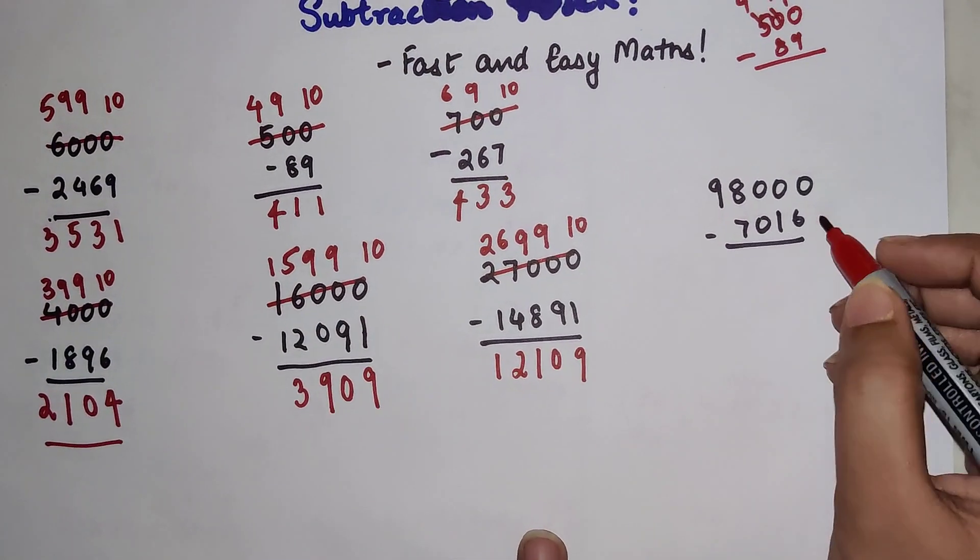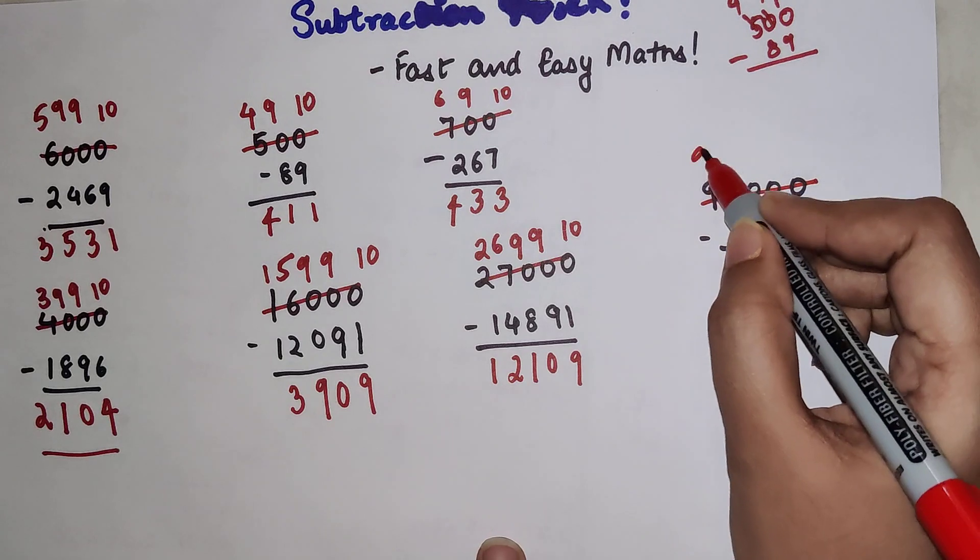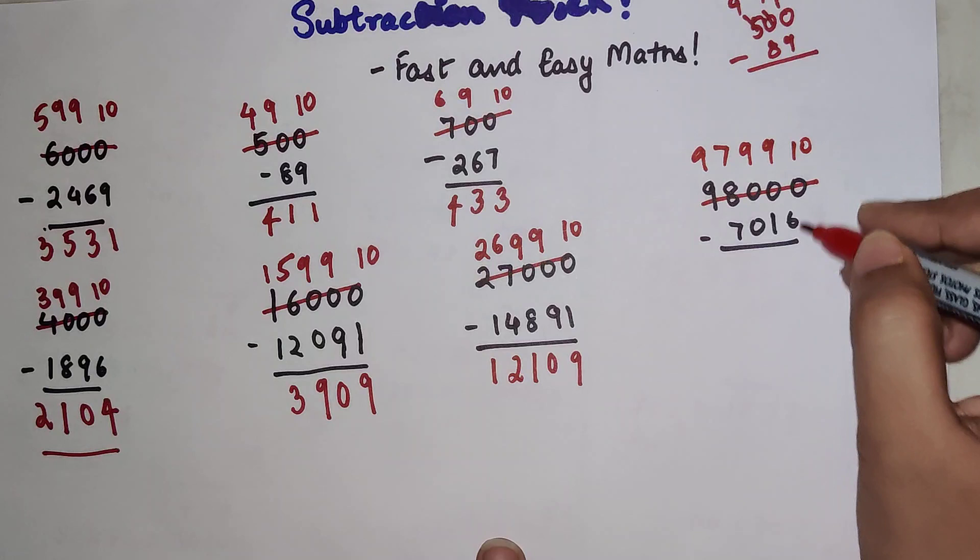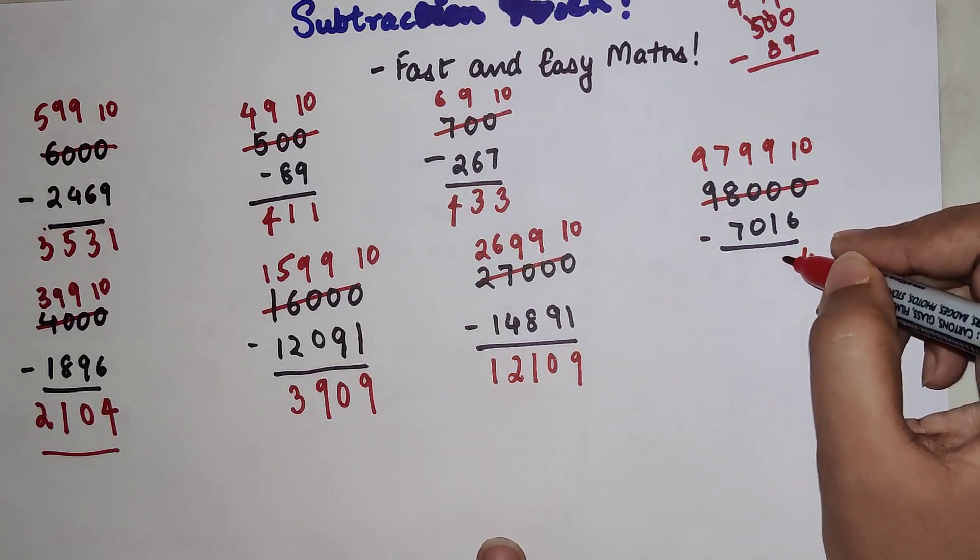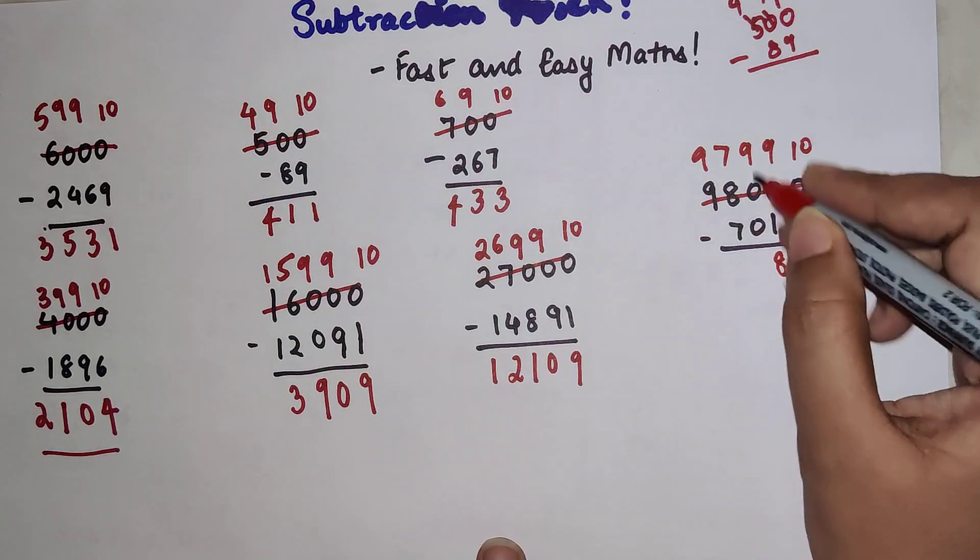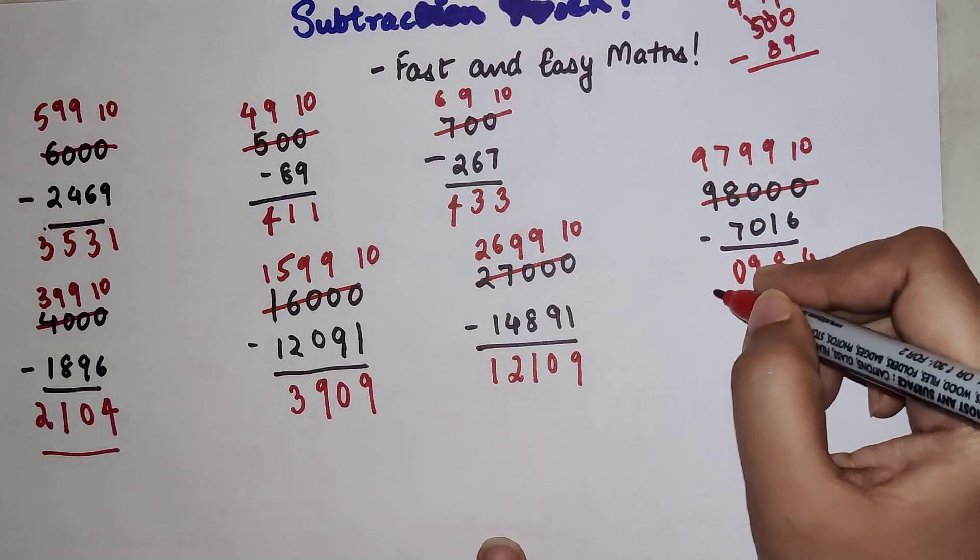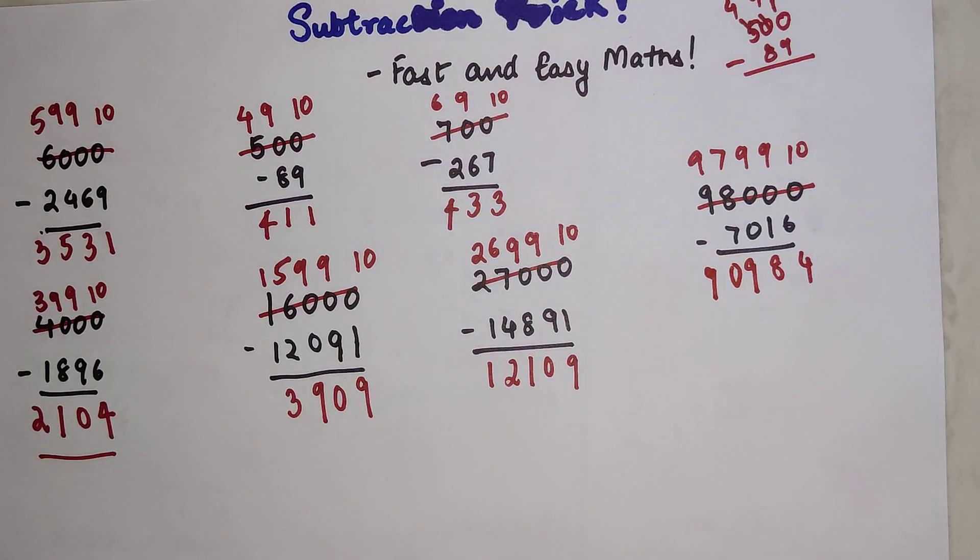So now for this one what you should do is we will do 9, 7, 9, 9, and 10. So now 6 taken from 10 gets you 4, 1 taken from 9 gets you 8, 0 taken from 9 gets you 9, 7 taken from 7 gets you 0, and 9 will be written as it is. So your answer for this one is 90984. I am sure you all got the hang of this particular sum.